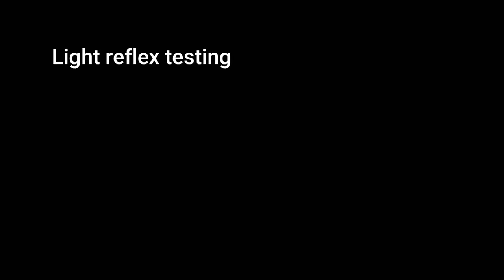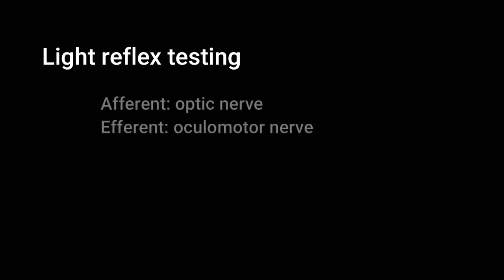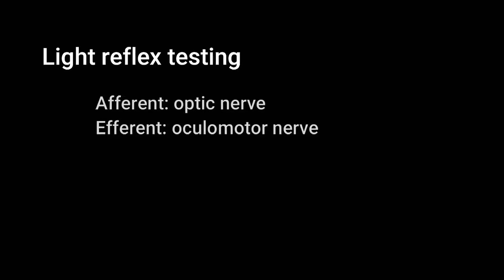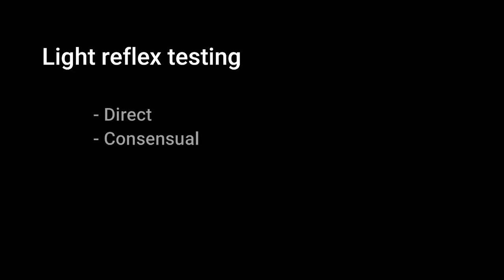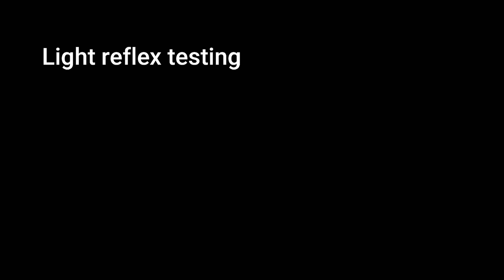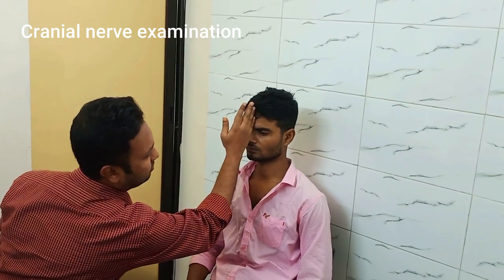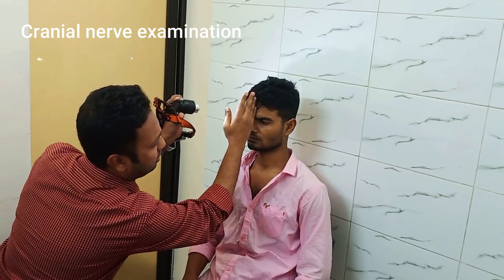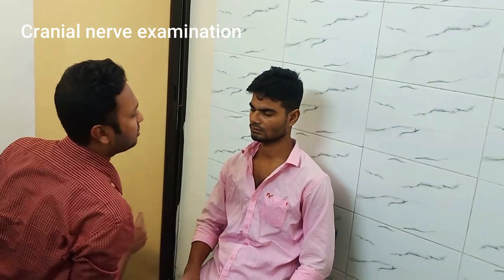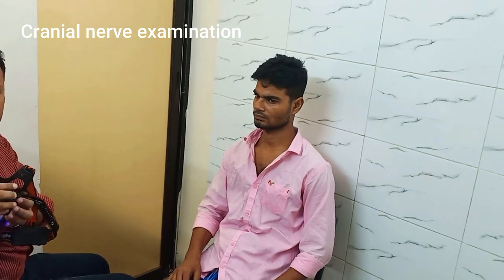Now the light reflex of the patient is tested. The afferent pathway of the light reflex is through the optic nerve and the efferent pathway is through the oculomotor nerve. Direct and consensual light reflex are performed to see pupillary constriction in response to light. In direct light reflex, the same eye is observed for pupillary constriction, whereas in consensual light reflex, the opposite eye is observed.